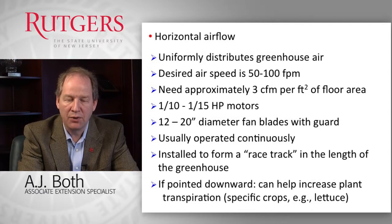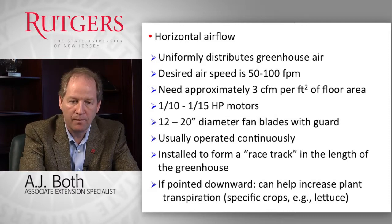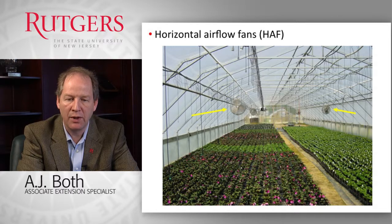In some cases, horizontal airflow fans have been rotated so they point straight down to create direct airflow patterns hitting the leaf surfaces. For some crops — for example, lettuce — this has shown to increase plant transpiration, and as a result increase the uptake of nutrients to help prevent issues such as tip burn in lettuce crops. Here's an example of what a horizontal airflow system looks like in a greenhouse. The fans on the left-hand side are pointing towards us so air is blowing towards us, and on the right-hand side the fans are blowing air in the opposite direction. By running these fans continuously, you can create a racetrack pattern that provides good mixing of the air inside the greenhouse environment.